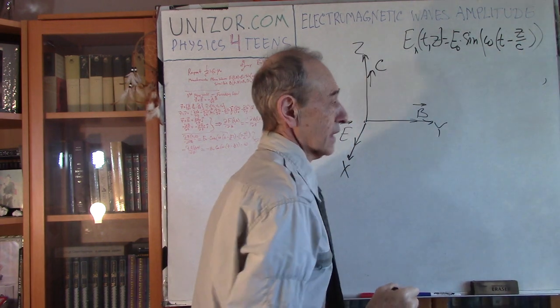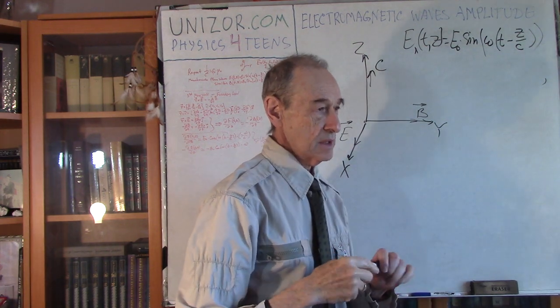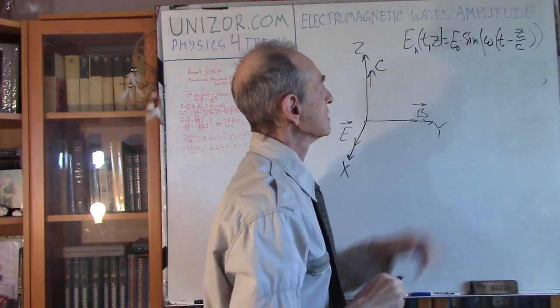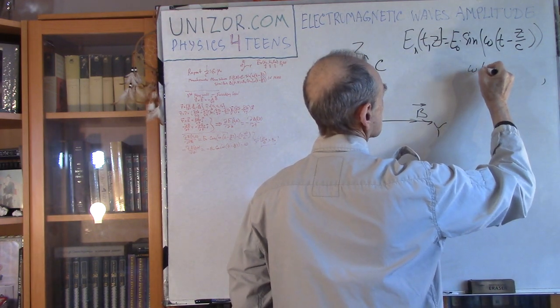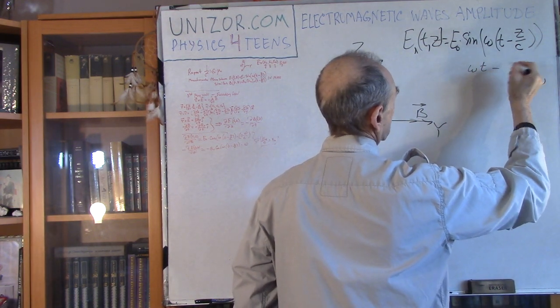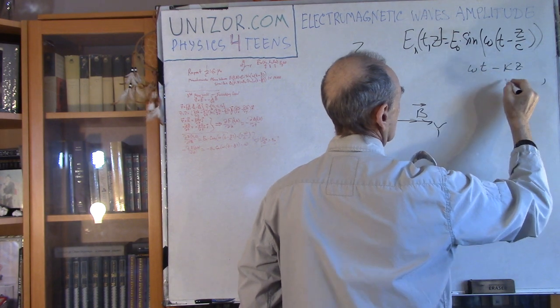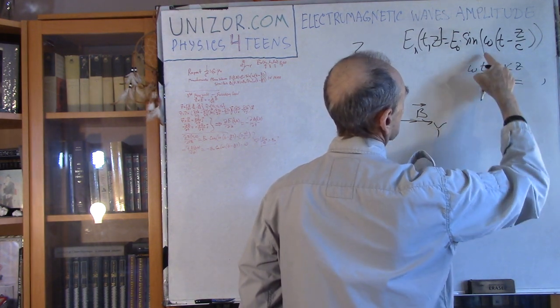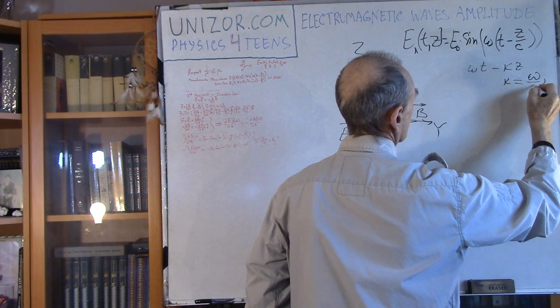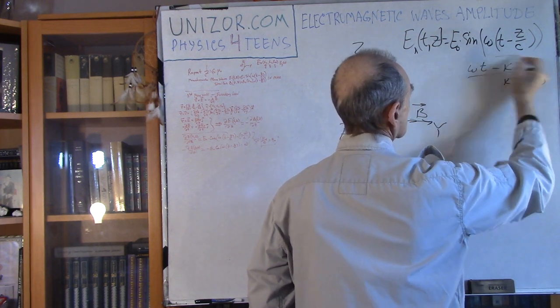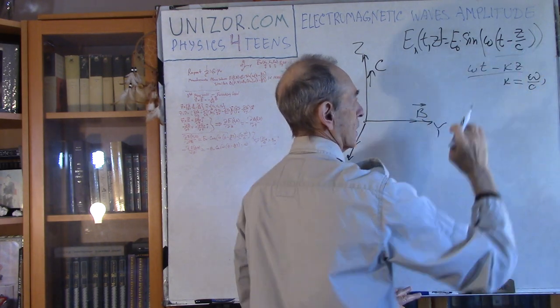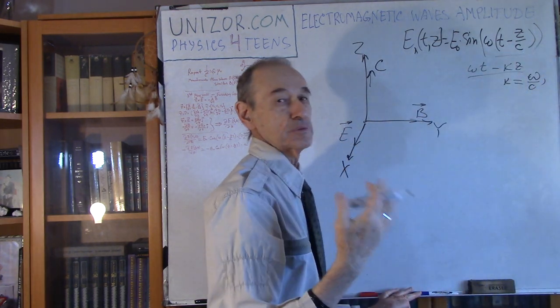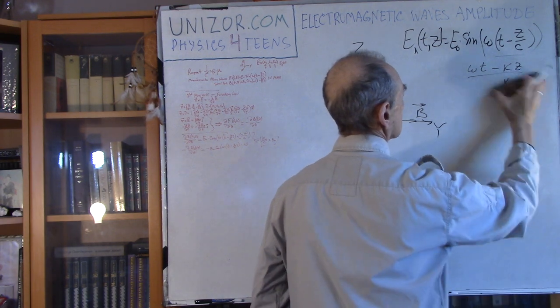In textbooks you might see a slightly different expression like omega t minus or plus kz, where k equals omega divided by c. This expression is exactly the same as this one. However, I personally prefer this one because it has physical meaning.